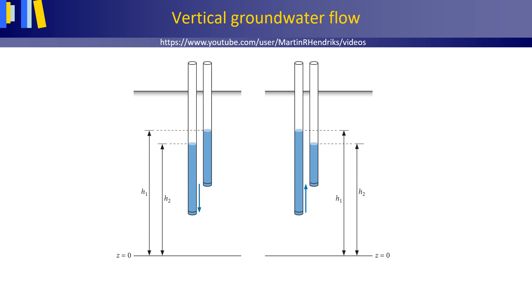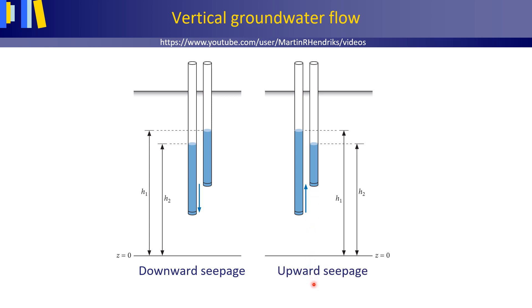If we were to install two pitometers close together in the subsurface — one with its screen deeper down under the water table and one with its screen higher up but also under the water table — we can, as water flows in the direction of the lower hydraulic head, establish the direction of vertical groundwater flow. In the left figure, the lower hydraulic head H2 is in the pitometer with the deeper screen: downward seepage. In the right figure, the lower hydraulic head H2 is in the pitometer with the shallower screen: upward seepage. In the Netherlands, the latter is the common situation for the lower-lying polder areas, whereas downward seepage is the common situation for higher parts of the landscape.